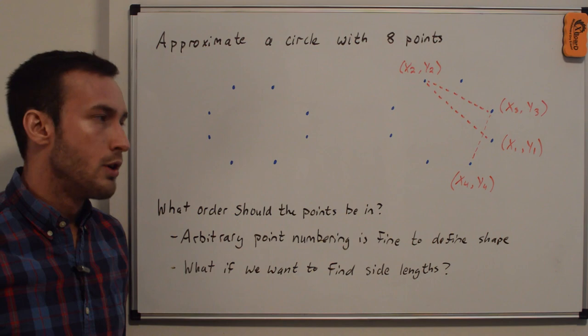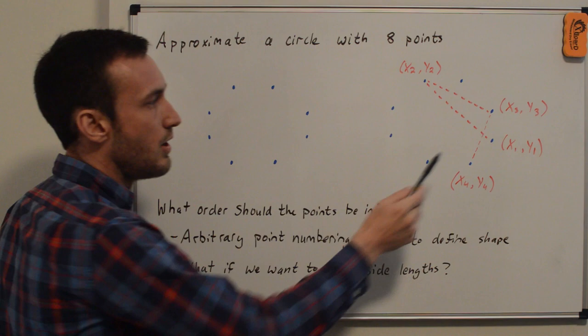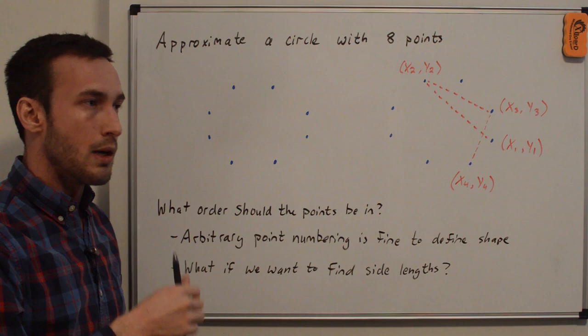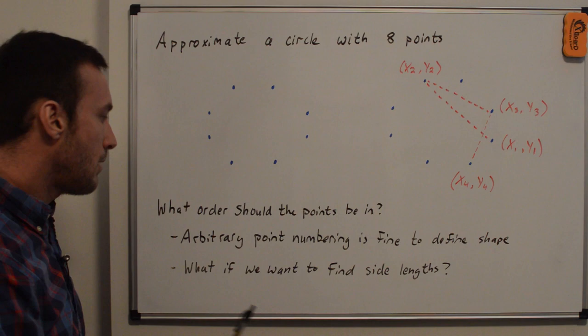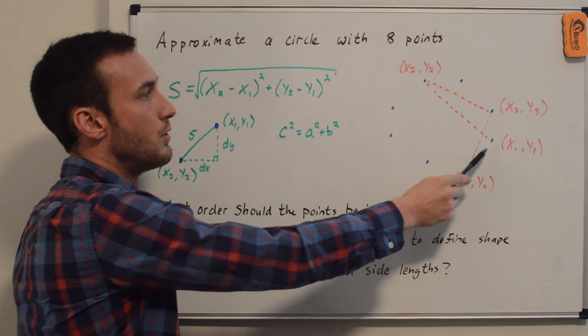So the question is, what order should these points be in? I've drawn the same eight points defining our circle approximation, and we could say this is point one, point two, point three, point four, et cetera. With each point we have an associated x and y coordinate. This arbitrary point numbering is fine to define the shape — if I plot every one of these points in my program, I'll get this approximation of a circle. But the problem is, what if we want to find the side length between each point? We will need to use the coordinate points of the points that are bounding the panel or the side to compute that panel length.